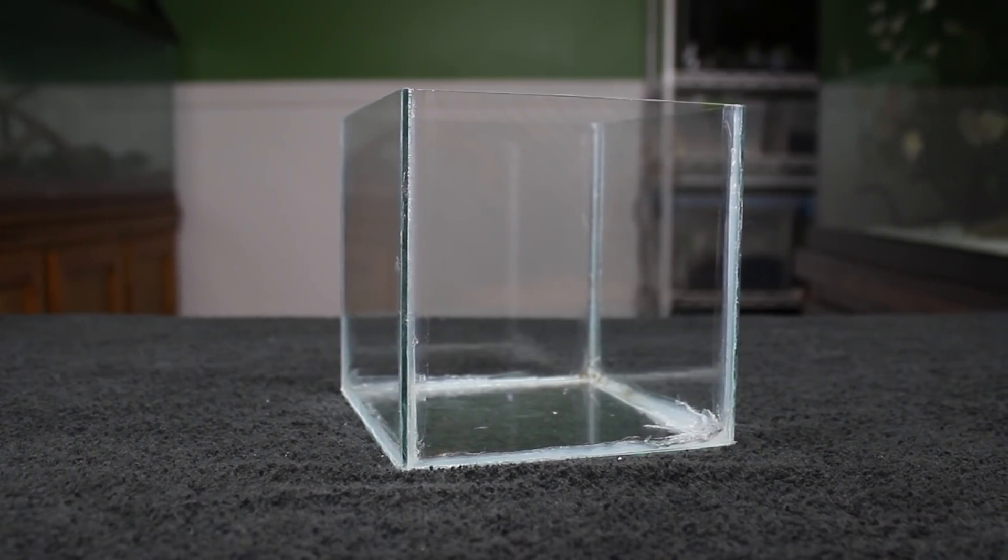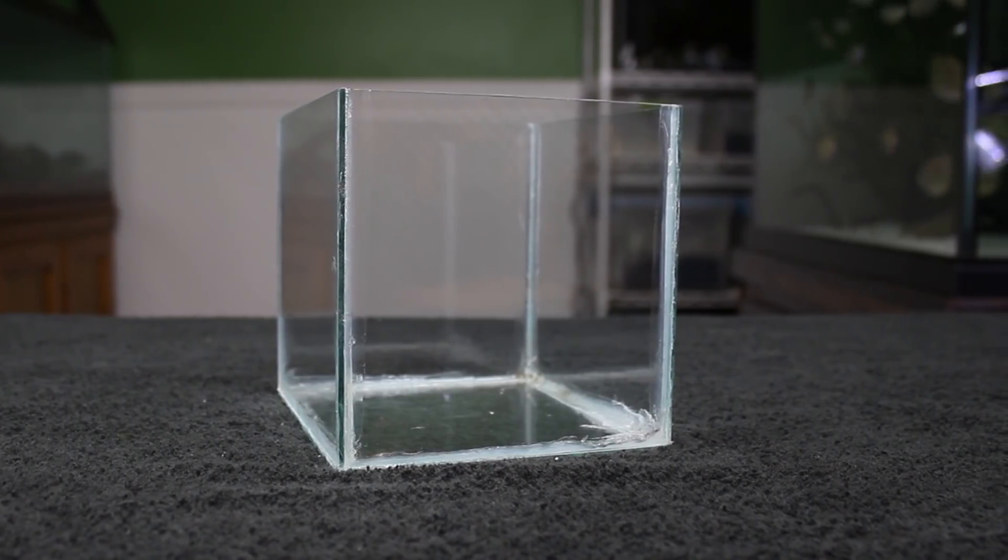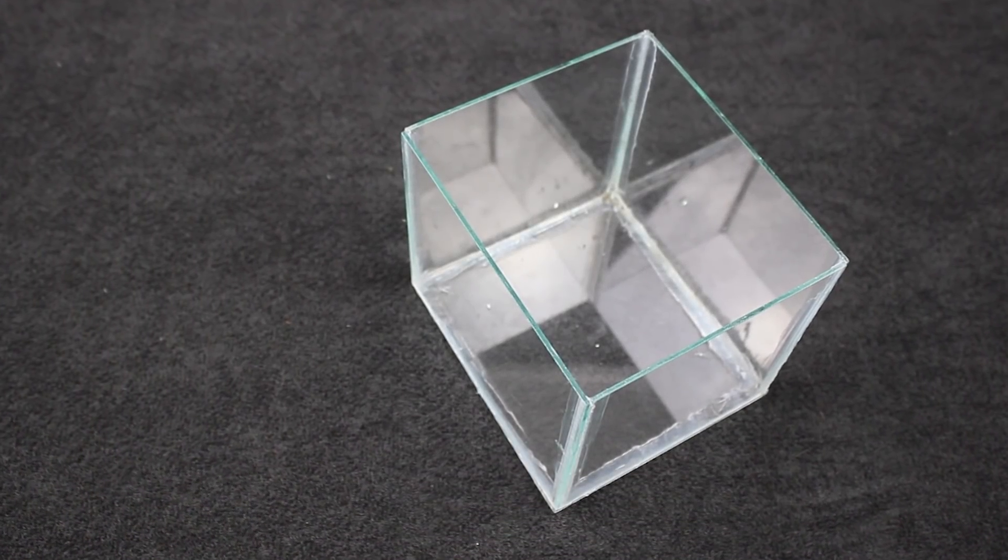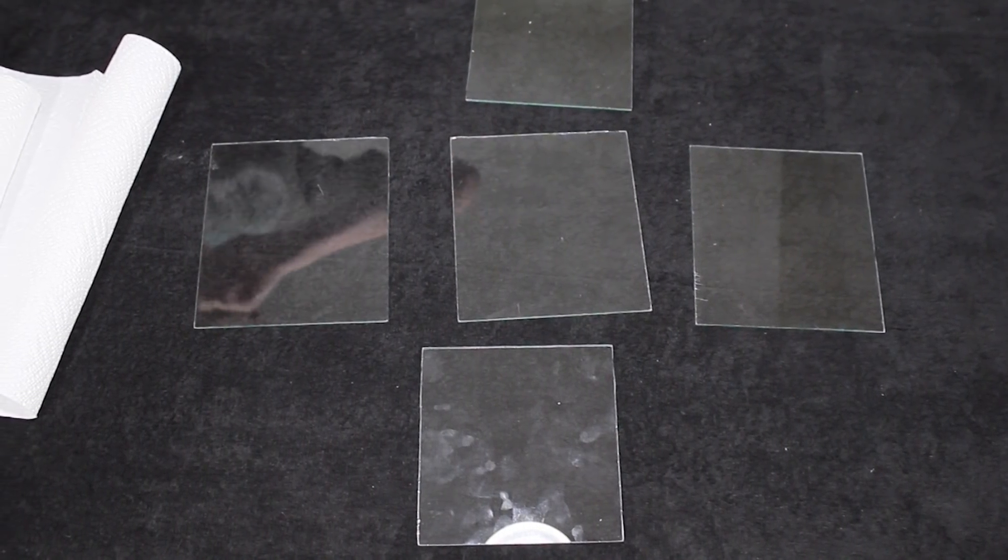We'll begin by building a 0.8 gallon glass aquarium, which is the whole reason that this project even exists. I have a bunch of offcuts of 1/8 inch thick glass that I needed to use for something, so I decided to build a nano aquarium with some of it. As you can see I already pre-cut the pieces to the appropriate sizes and sanded the edges.